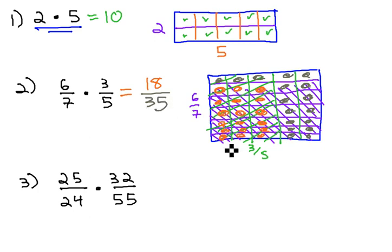18 out of 35 of the small rectangles have been shaded. What's interesting about this is you may notice that the double shaded area comes from the numerators. It's a 6 by 3 rectangle. Multiplying straight across the numerators will tell us the amount that's double shaded, 6 times 3.